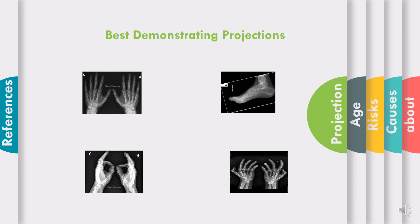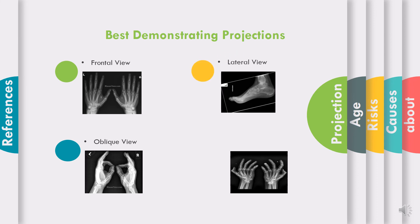The best demonstrating projections are routine X-rays, which include the frontal view, one or two oblique views, the lateral view, and a special view called the ball catcher view.